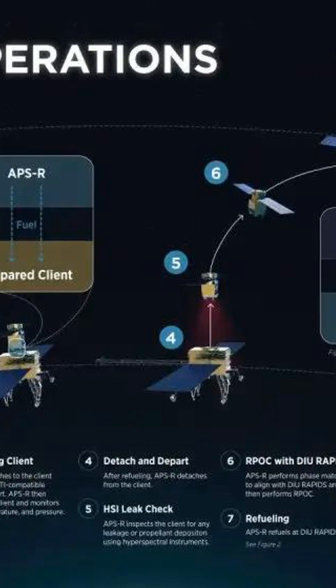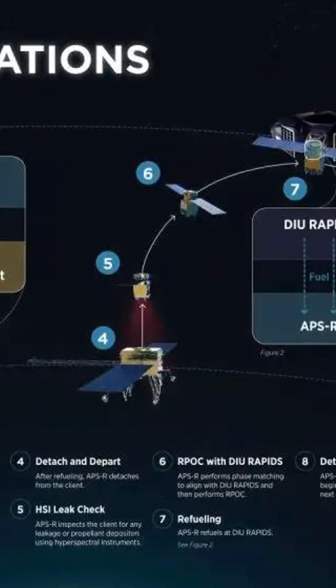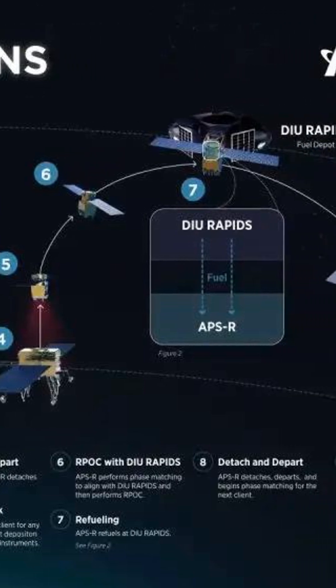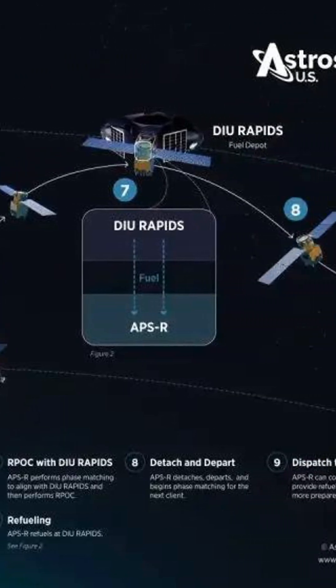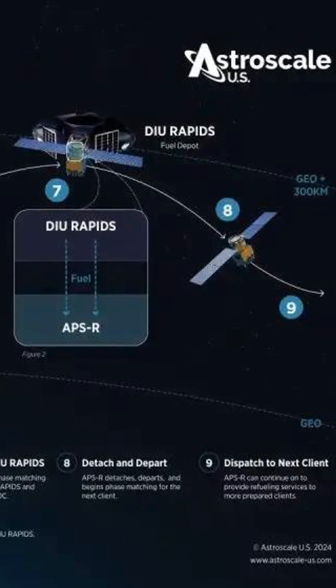If successful, this experiment will pave the way for the development of a full-scale orbital refueling system called GAST, aimed at servicing satellites in geostationary orbit.